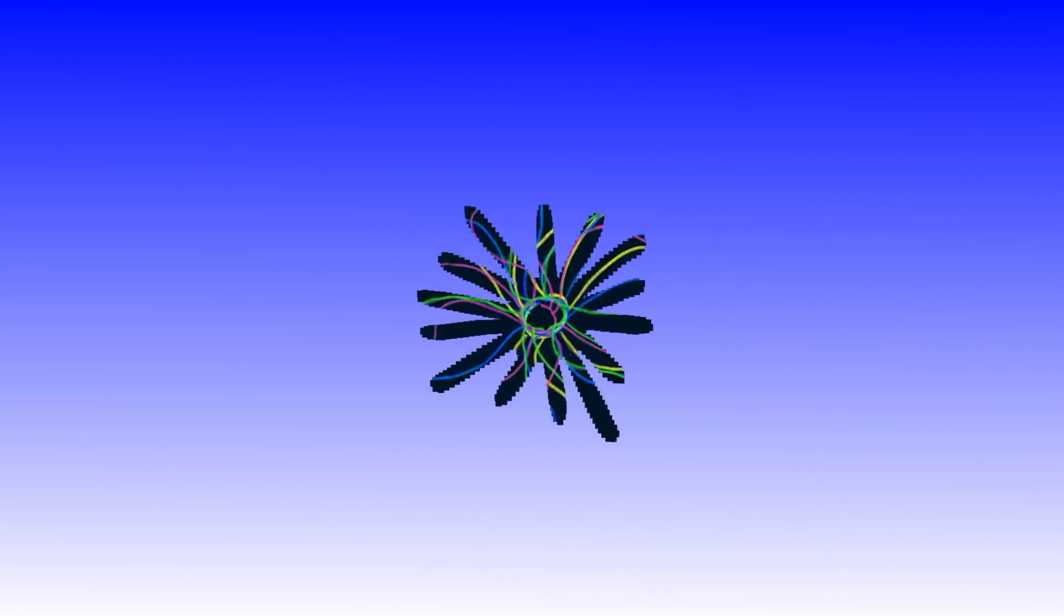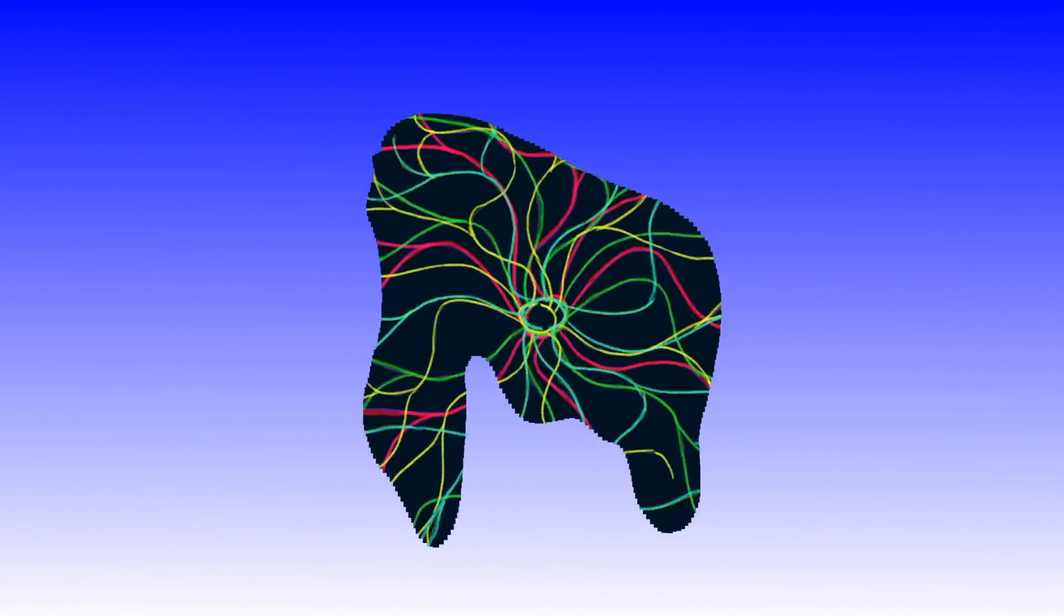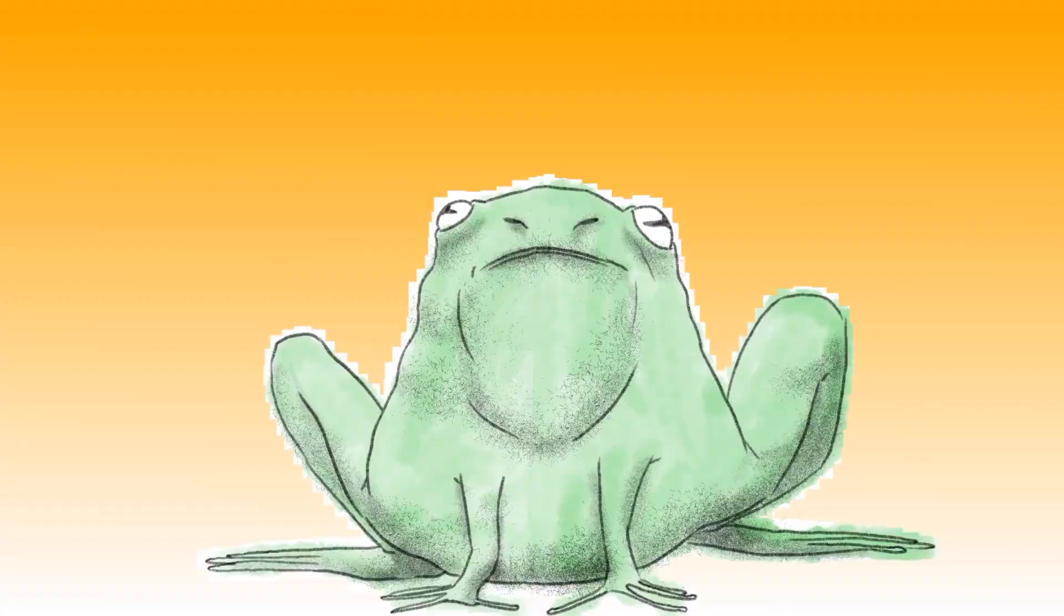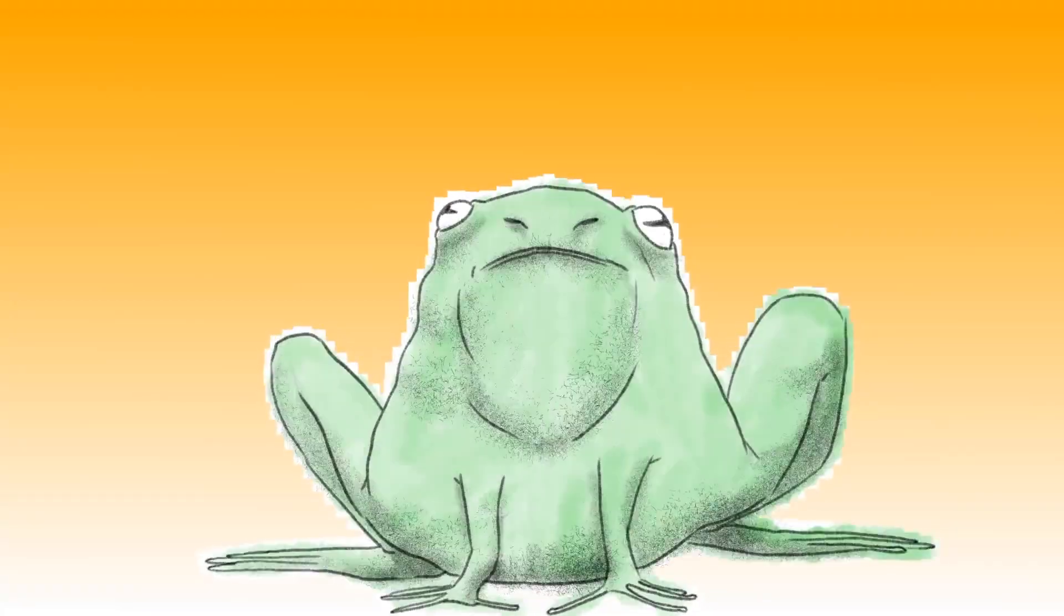Scientists don't know for sure why we have that crossing over. One theory is it began soon after animals developed more complex nervous systems, because it gave the survival advantage of quicker reflexes.